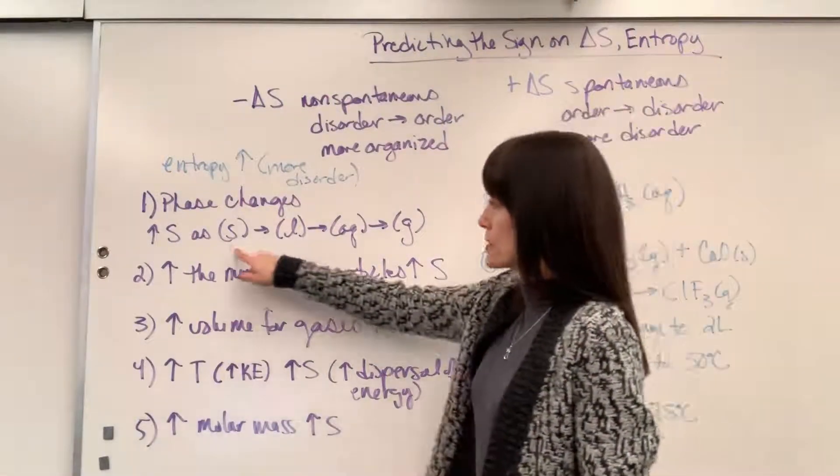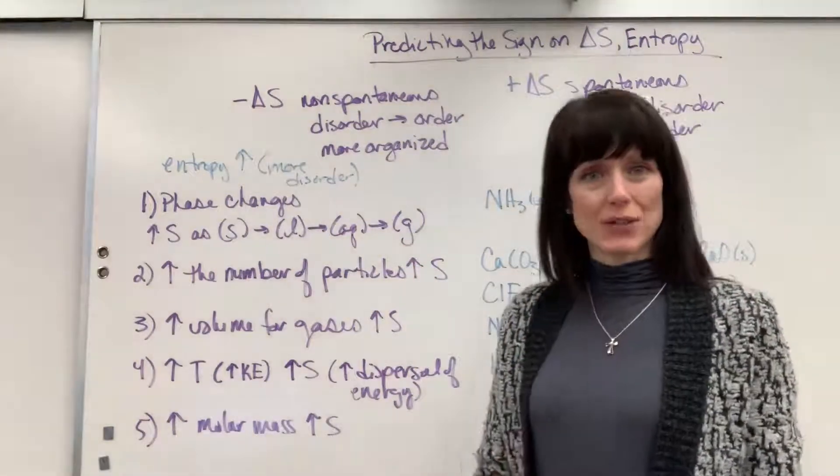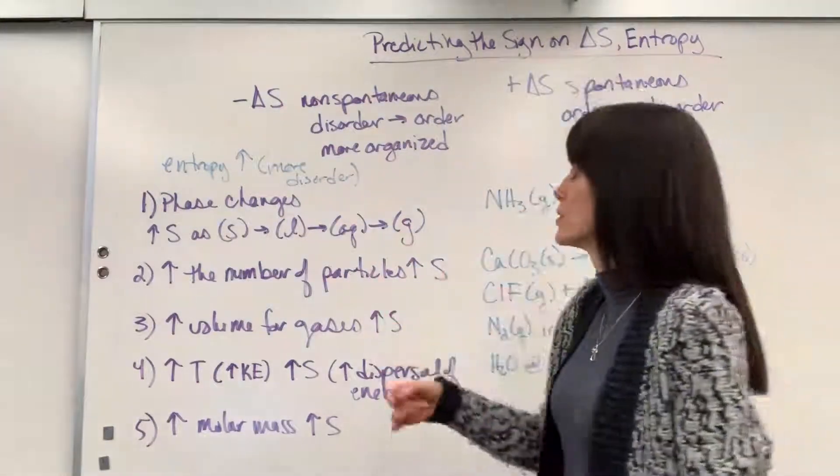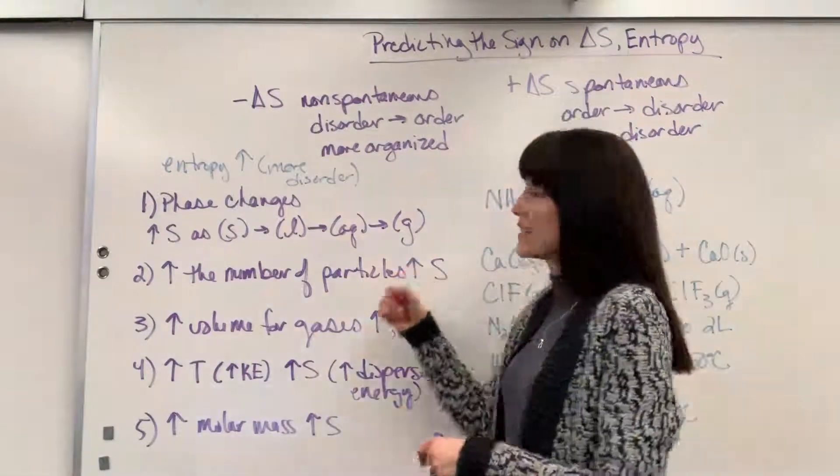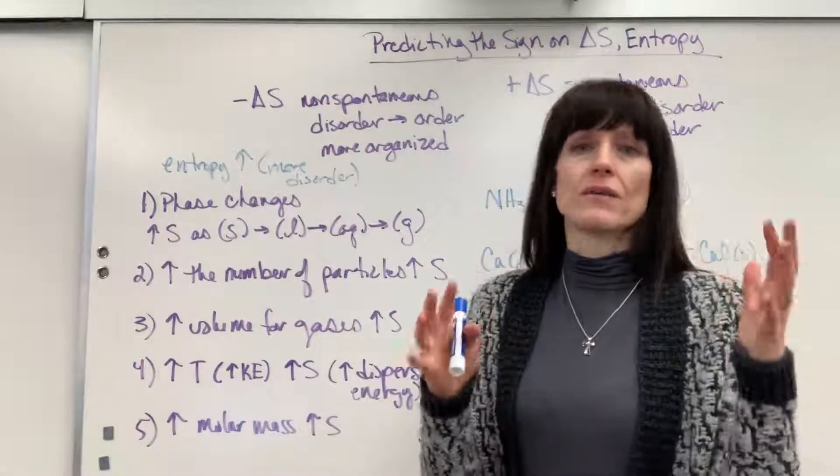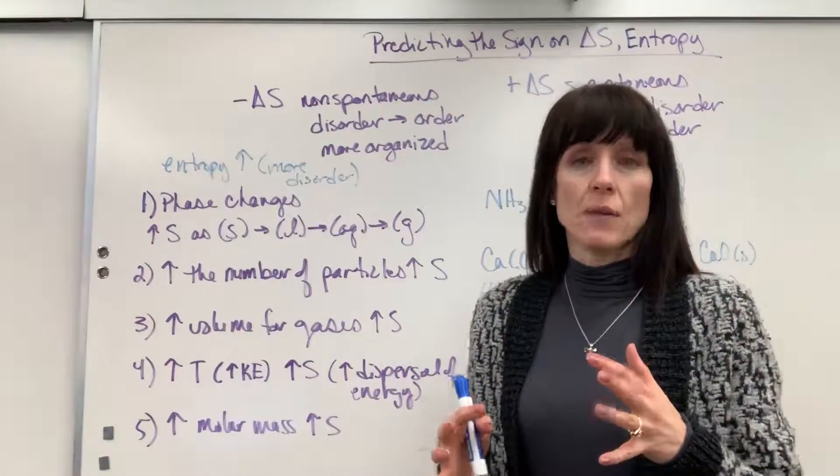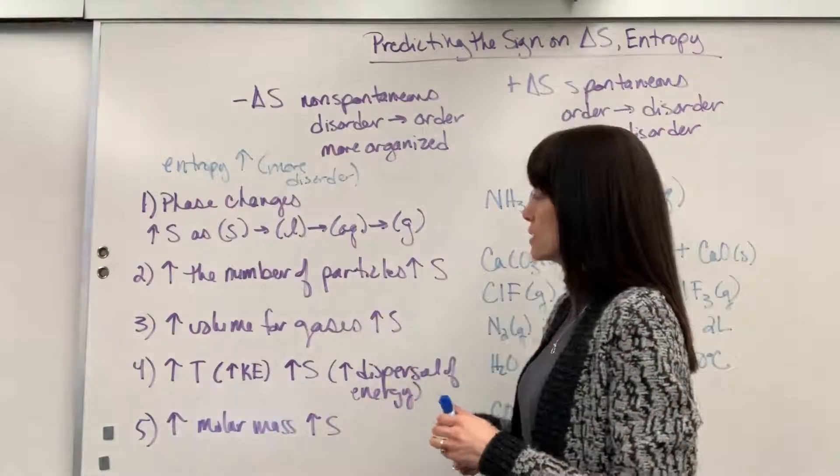So entropy is a measure of disorder. As we're going from a solid to a liquid to aqueous to gas, that is increasing entropy, becoming more disorganized. It's super easy to see from a solid that's in an organized, fixed position, to gas that's 100% random. I call them maniacs, disorganized, moving individually on their own paths. You can see that the disorganization increases.